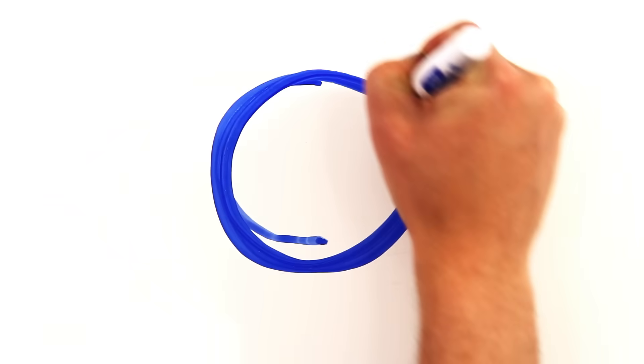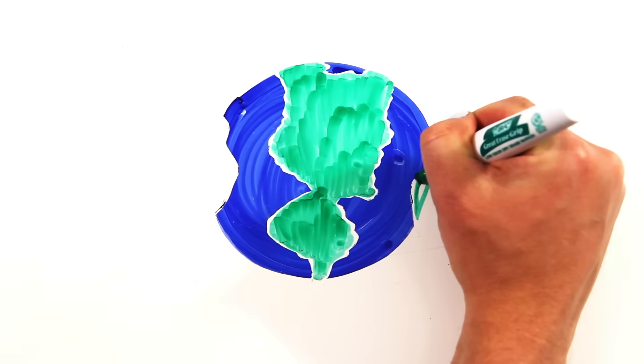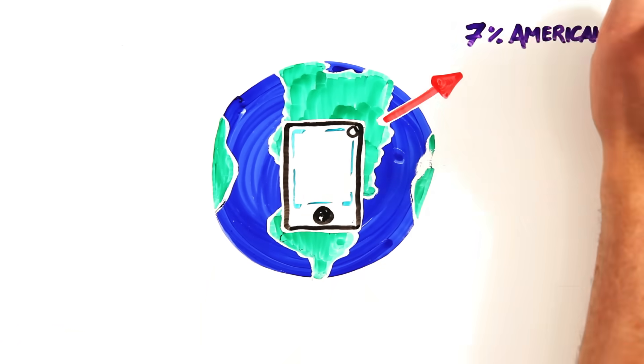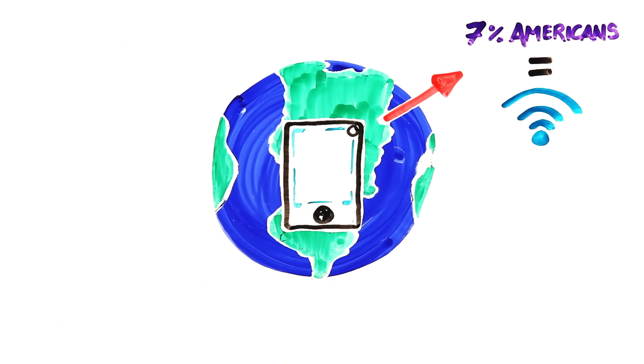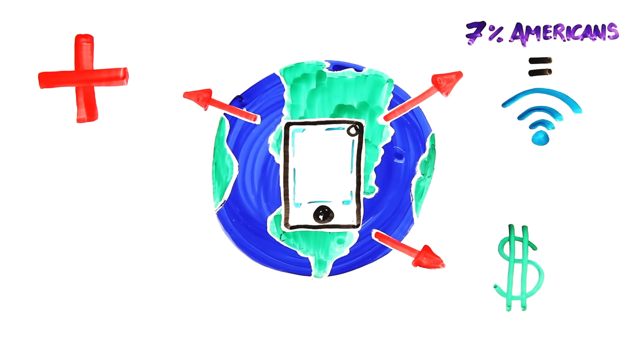Of course, smartphones also completely change our ability to access information, most notably in poor and minority populations. 7% of Americans are entirely dependent on smartphones for their access to the internet. A 2014 study found that the majority of smartphone owners use their phone for online banking, to look up medical information and searching for jobs.